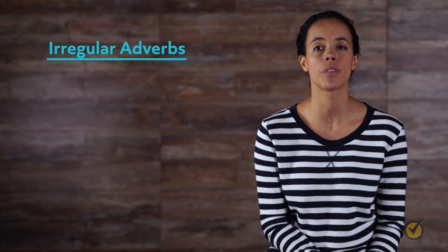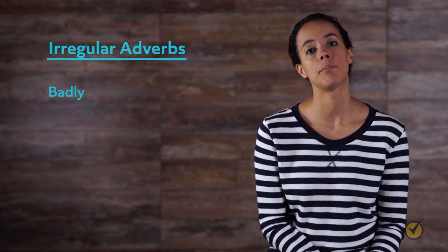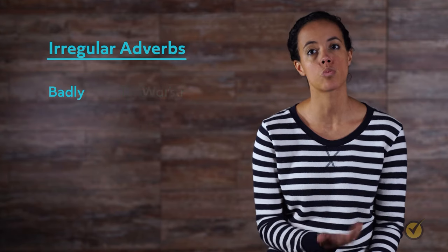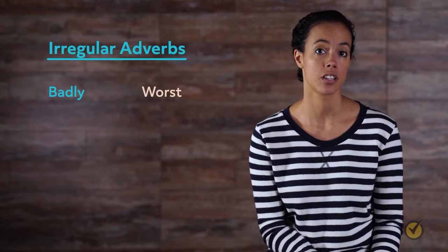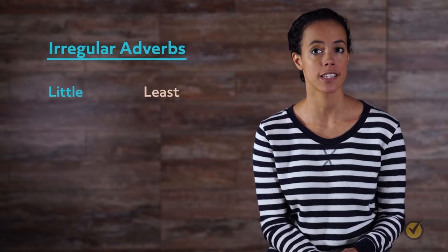Some adverbs can't be made comparative and superlative with er, est, more, or most. For irregular adverbs, changing their degree of comparison means changing the word and its spelling entirely — they must be memorized. The word badly is an example of an irregular adverb. To make it comparative, you wouldn't say more badly or badlier — the comparative form is worse, and the superlative form is worst. Other examples of irregular adverbs include little, which becomes less and least, and good, which becomes better and best.